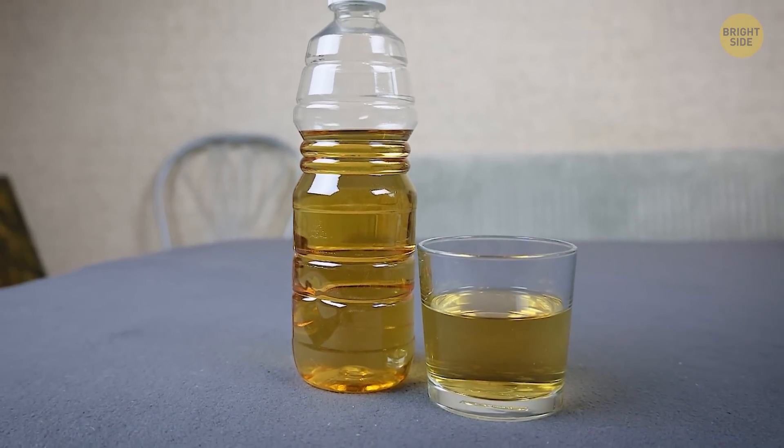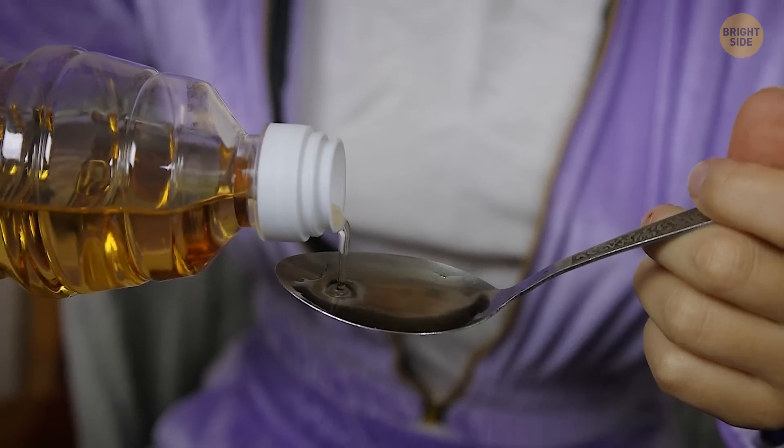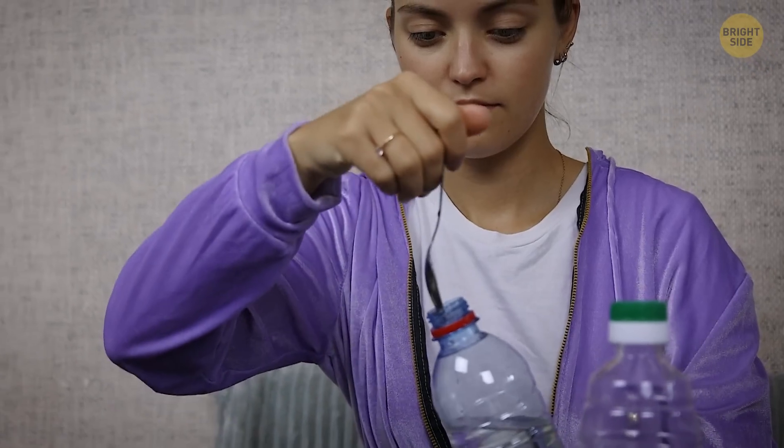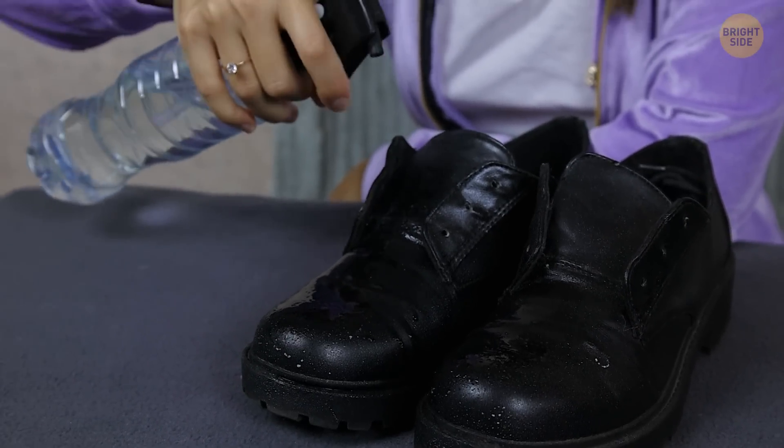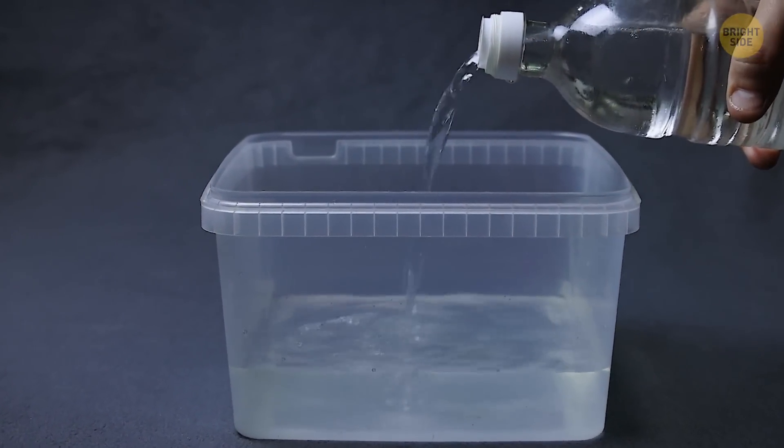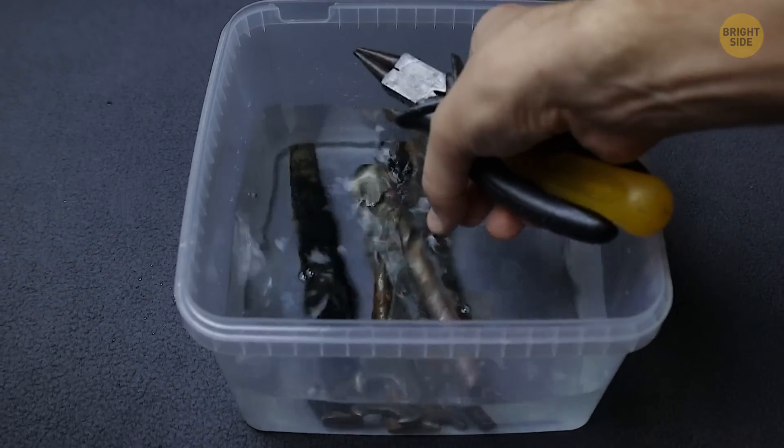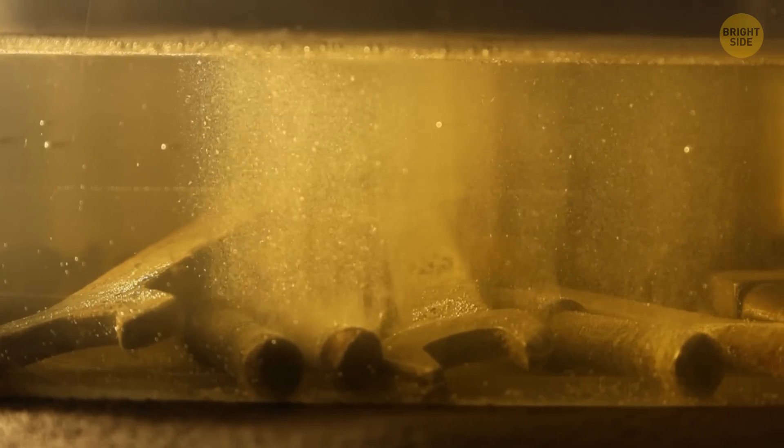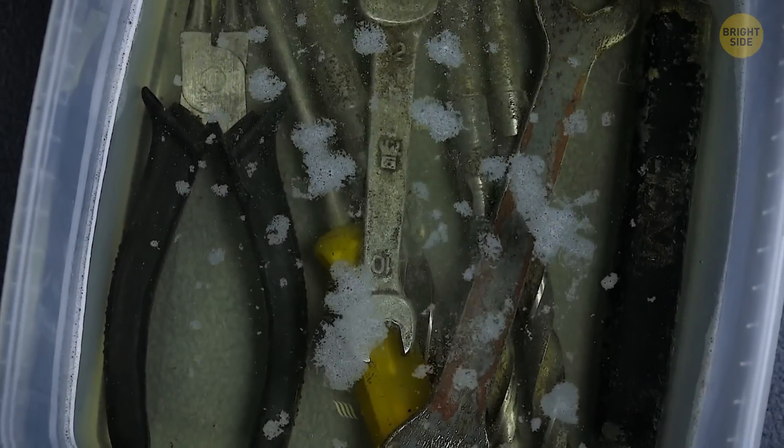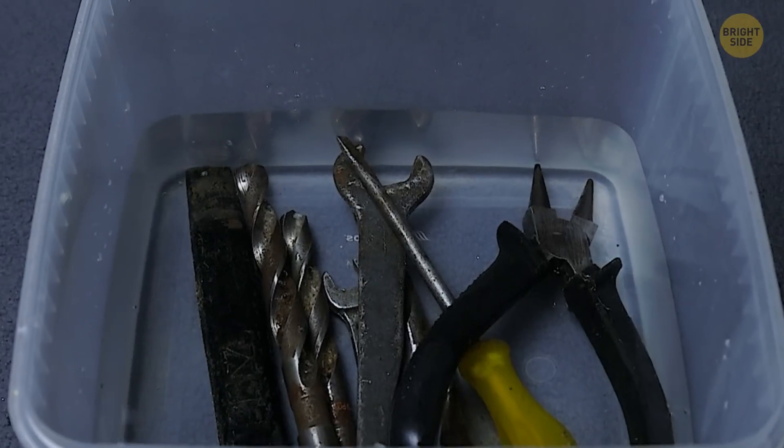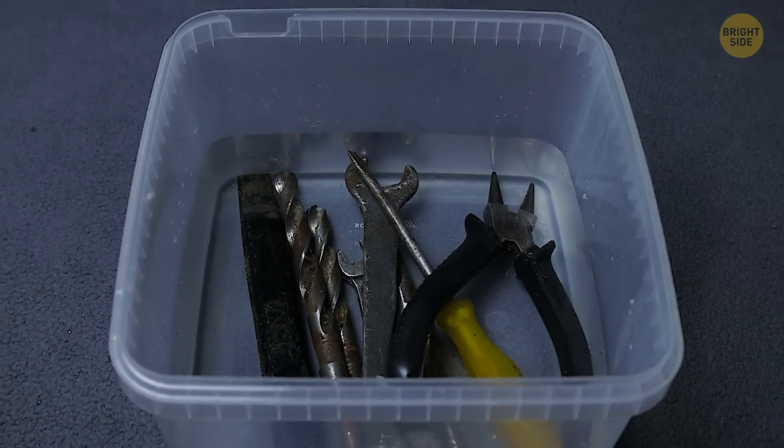Vinegar by itself can be used for many purposes. A couple of teaspoons mixed with water in a spray bottle will easily remove salt stains from shoes. Pour white vinegar into a container and place rusty tools inside. Overnight, the vinegar will eat away at the rust. After 24 hours, as you wipe it, you will be able to remove the corrosion easily.